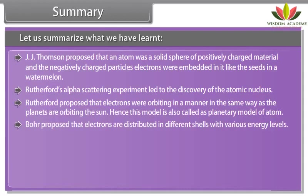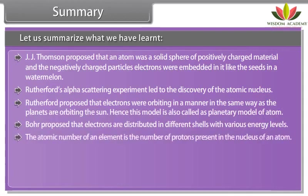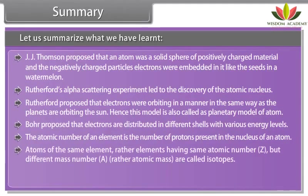Summary. Let us summarize what we have learned. J.J. Thompson proposed that an atom was a solid sphere of positively charged material and the negatively charged particles, electrons, were embedded in it like the seeds in a watermelon. Rutherford's alpha scattering experiment led to the discovery of the atomic nucleus. Rutherford proposed that electrons were orbiting.